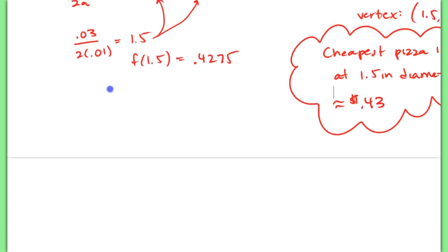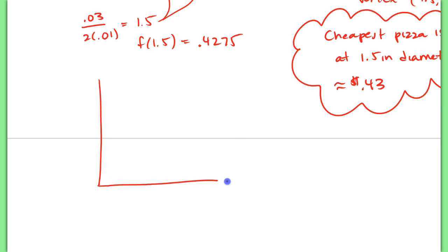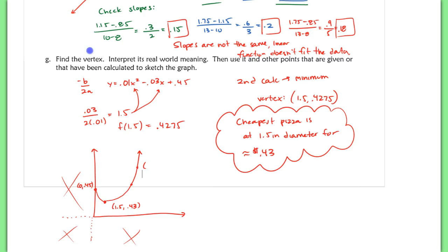And now for a sketch. If we were to sketch this, and keep in mind this is a real world problem, so you want to stay in the first quadrant because you can't have a negative number of inches, or a negative value for your price. So we're going to stick to the first quadrant. We've got our y-intercept. That y-intercept was at 0.45. Remember, that was the price of the box. We dip down a little bit until we get to our vertex here, which was 1.5 comma 0.43. And then we go back up, and we can list our various points here that we've calculated.